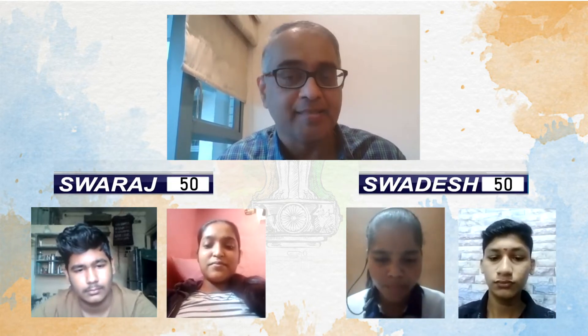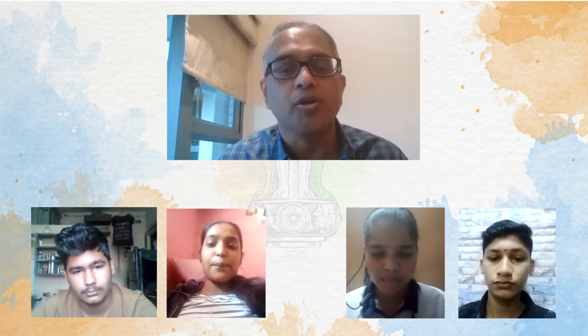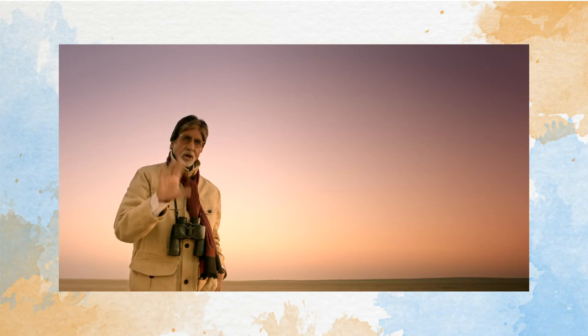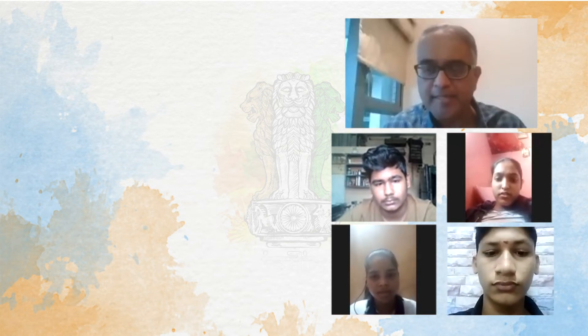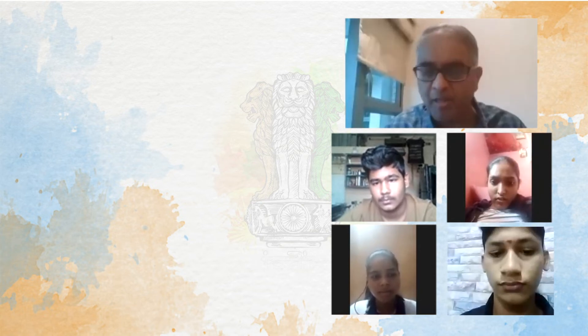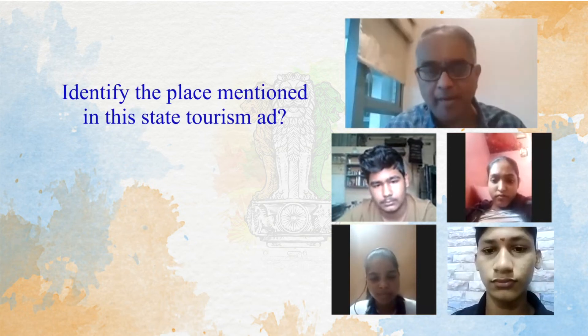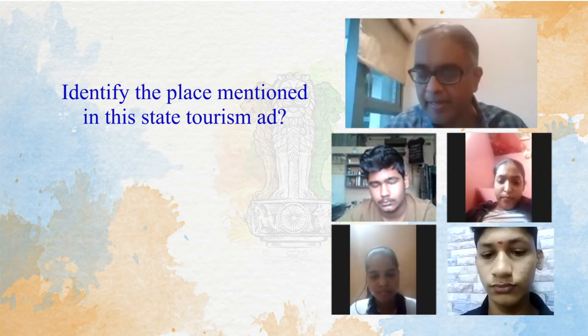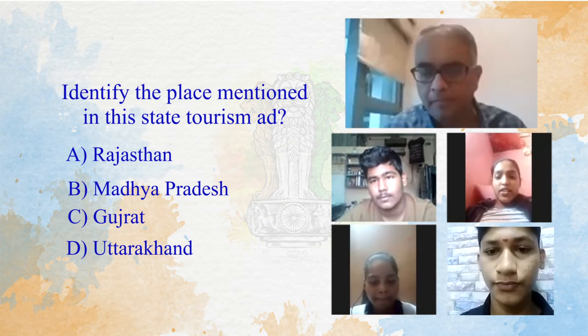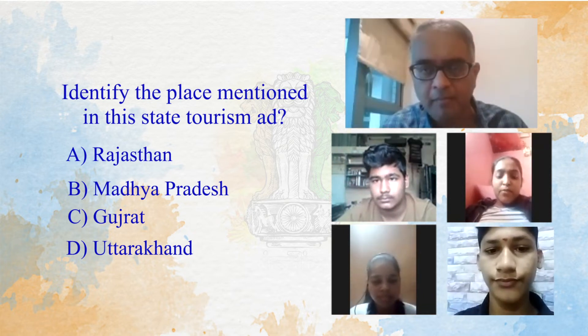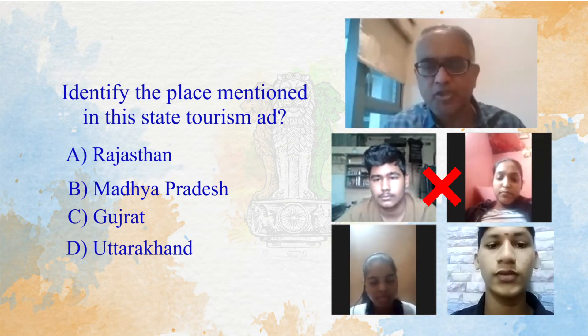The next round is a very interesting one — it's a decider. It's an audio-visual round where you will see a picture or a clip and then the question will be asked. The first question goes to team Swaraj. What you saw is a picture of a particular tourism advertisement featuring the well-known brand ambassador Amitabh Bachchan. Which state is he promoting? Is it Rajasthan, Madhya Pradesh, Gujarat or Uttarakhand? Team Swaraj answered Rajasthan — but no, the correct answer is Gujarat.